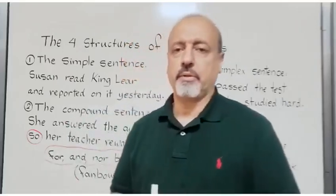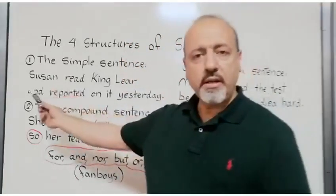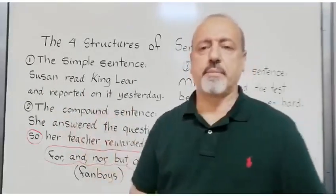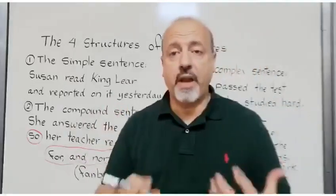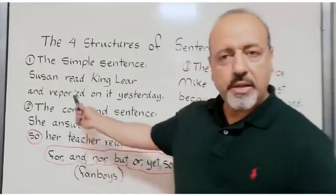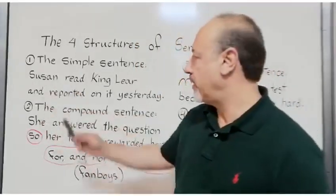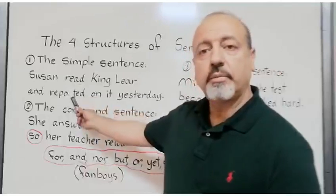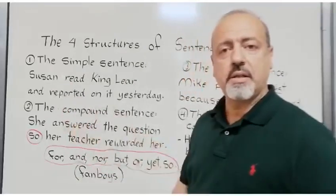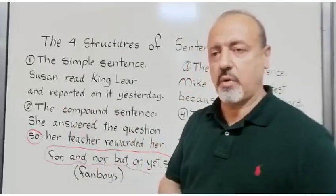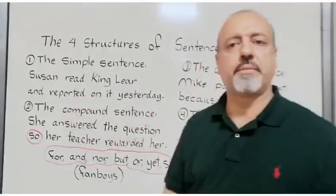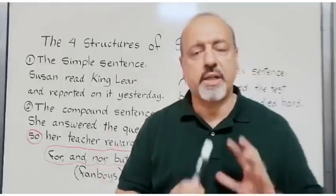Let's have an example: 'Susan read King Lear. I reported on it yesterday. King Lear is a famous play of Shakespeare.' The subject in this sentence is Susan; the verbs are 'read' and 'reported' — it's a compound verb. So the sentence here is a simple sentence with one independent clause. We notice that here we do not have a subordinate clause.